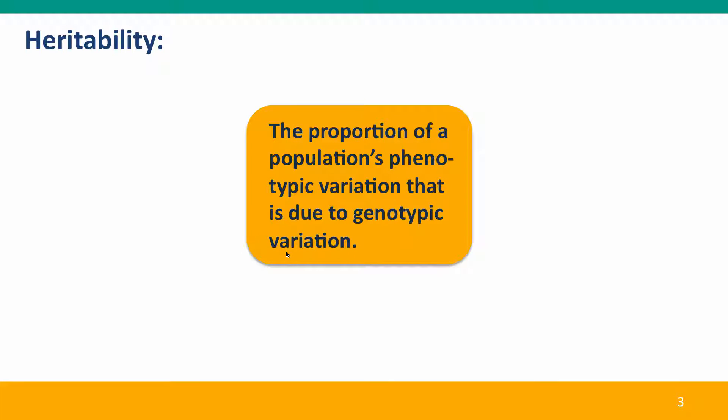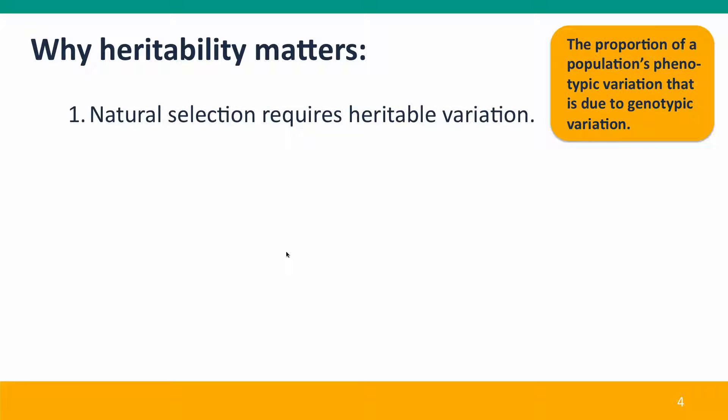Heritability is the proportion of a population's phenotypic variation that's due to genetic variation — it's how big a difference genes make to the phenotypes of the individuals in the population. Heritability is really important for a number of reasons. First, natural selection is entirely dependent on the existence of heritable variation that affects phenotypes, and so we need to understand heritability of any trait whose evolution we're interested in.